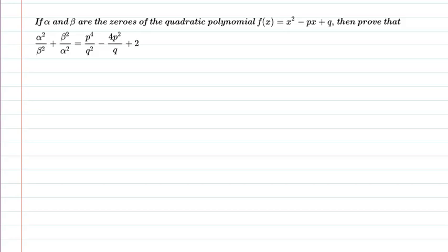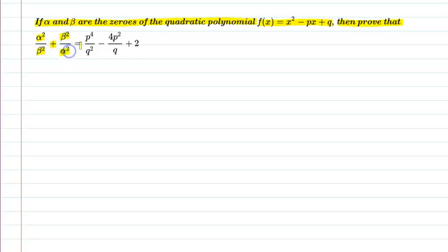Hello students, let us understand the following question. If alpha and beta are zeros of the quadratic polynomial f(x) = x² - px + q, then prove that α²/β² + β²/α² = p⁴/q² - 4p²/q + 2.